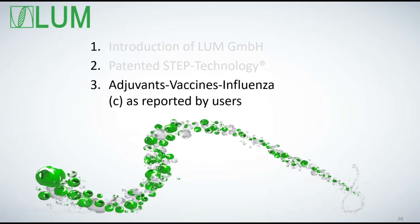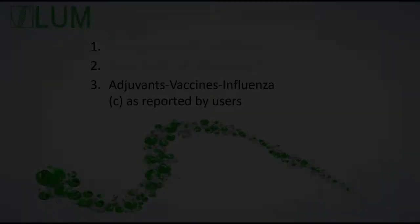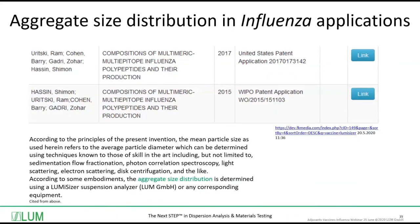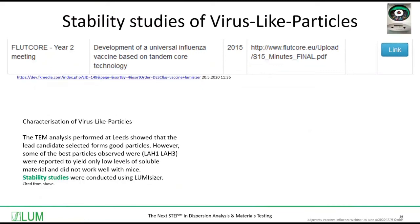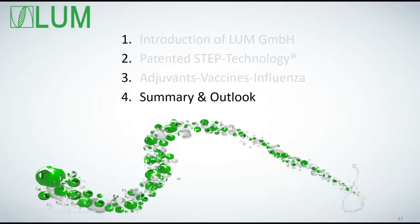I would like to continue now after this in-house LUM case study with examples we have found in the literature. For any details, I always recommend contacting the authors of the patent or publication — you will find the links on the LUM website. Regarding stability studies of virus-like particles: if this is your area of interest, you may want to know that results were published very briefly in conjunction with the European project called FluteCore. They use the LumiSizer for stability studies.